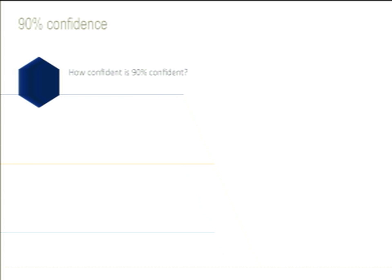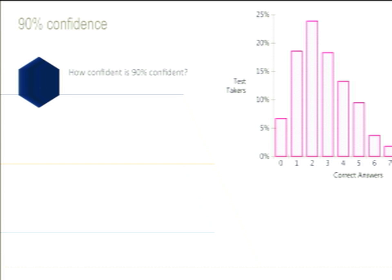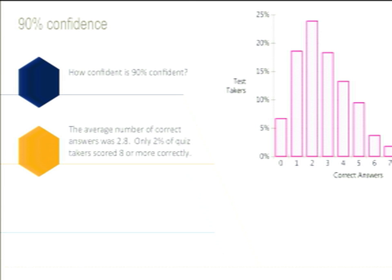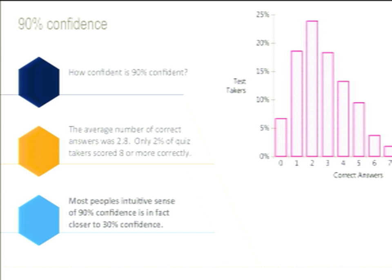This exercise has been done across many industries. They asked people 10 questions and said to be 90% confident — so you should get 9 answers right. It turns out people get nowhere near 90% right. The average number of correct answers was 2.8, and only 2% of quiz takers scored 8 or more correctly. What that means is that most people's idea of 90% confidence really means about 30%. That's why we triple all of our development estimates.